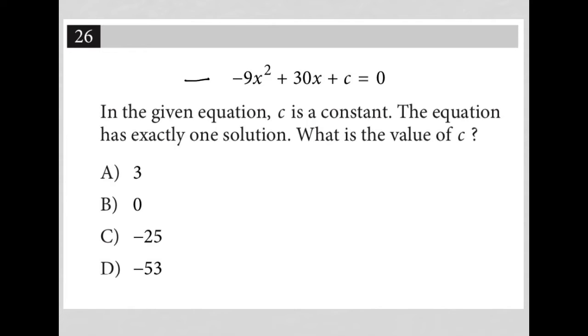So in this question, we're provided with this quadratic equation here. Negative 9 would be like our A value, 30 would be the B value, and then we have our C value here, which we don't know.